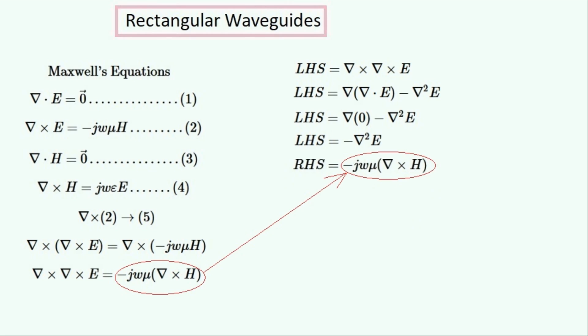Now we'll work on the right-hand side of this equation. We can substitute one of Maxwell's equations into it, which gives us this equation. Multiplying everything together gives us this.